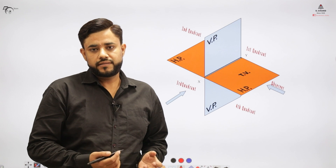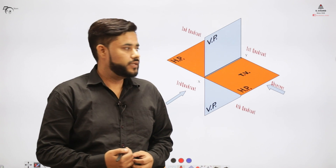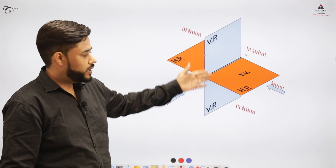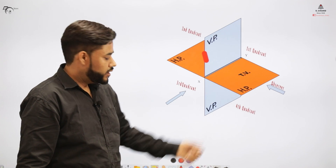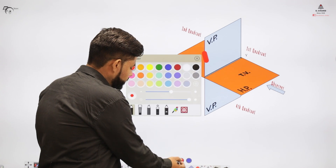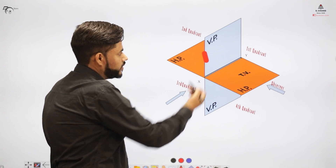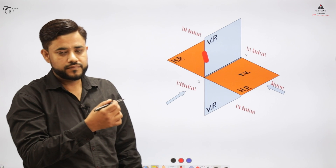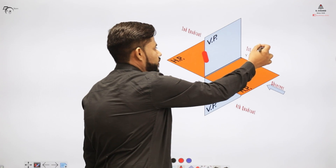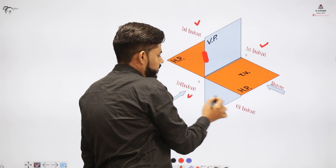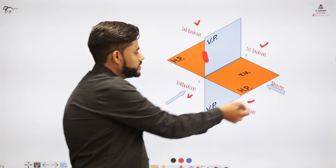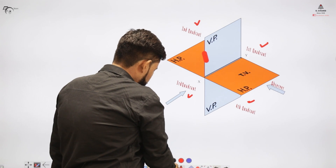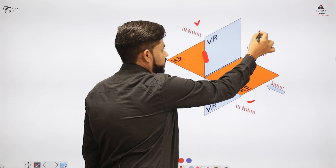In my previous video I talked about different quadrants where we place objects. We have two planes: the vertical plane and the horizontal plane. These two planes divide space into four quadrants — the first, second, third, and fourth quadrant. The observer is positioned here, and let's say we have an object — for example, a point.